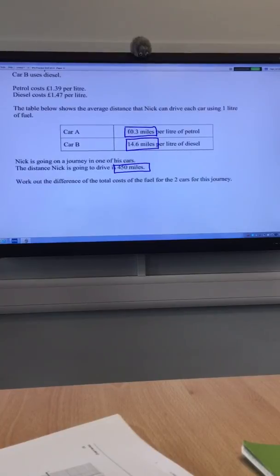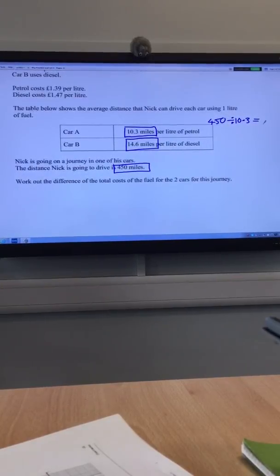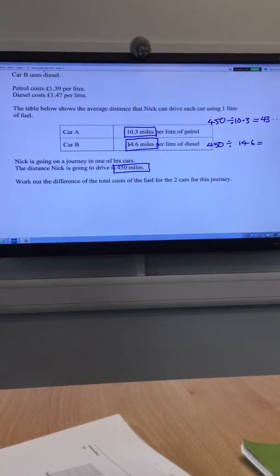So 450 miles here, it's 10.3 miles for each liter. If I do 450 divided by 10.3, it'll tell me how many liters he uses. So typing that in, it's around about 43.44-ish. Put dot dot dot, you don't want to leave that on your calculator. Second one, 450 you're going to divide it by how many 14.6's go in. Don't round, so 450 divided by 14.6 is about 30.8 and then dot dot dot. Do not round those, leave them as they are.